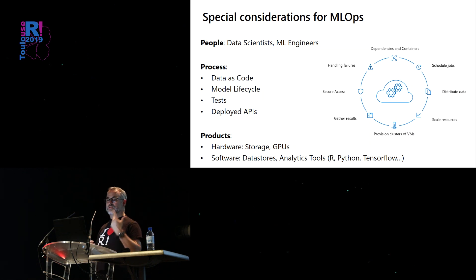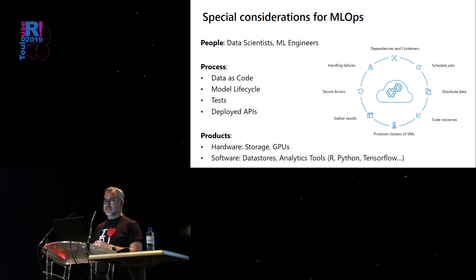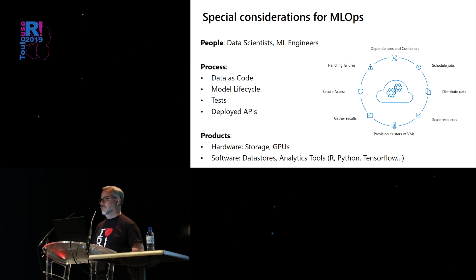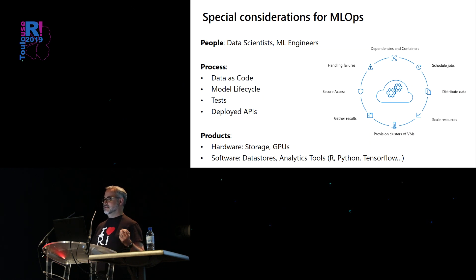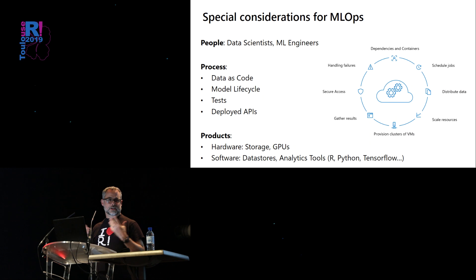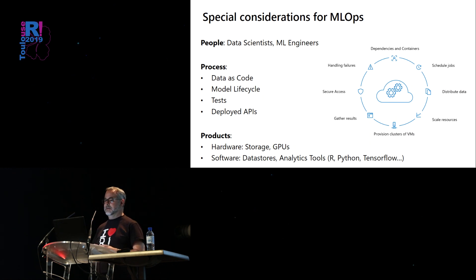That's what I want to focus on: there are special considerations for MLOps — a term for DevOps in the machine learning context — that are different from traditional software development. Talking about people, process, and products from Donovan's definition, the first difference is that there are different kinds of people involved. It's not just software engineers, IT people, and application developers. Into the mix, we also have data scientists and machine learning engineers, who have very different ways of working with data and software.